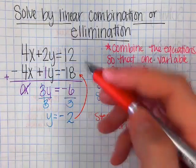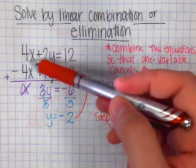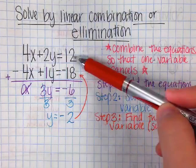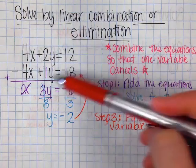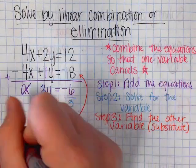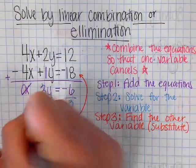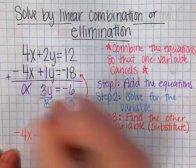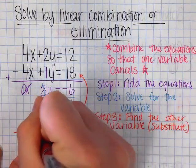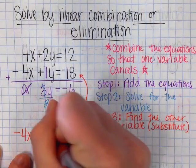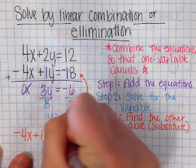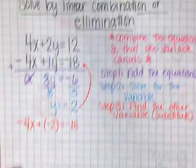I'm just going to pick the second one. Just because, I mean, you could, I don't know. It doesn't matter. Like, if you don't like using negatives and you want to do this top one, you get the same answer as if you use the second one. But negative 4x plus my y value, which is negative 2, equals negative 18.